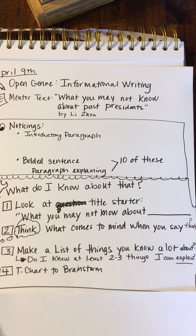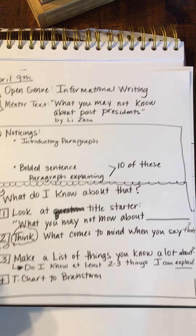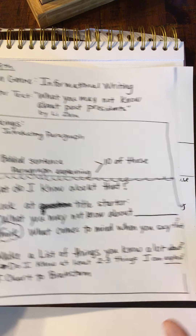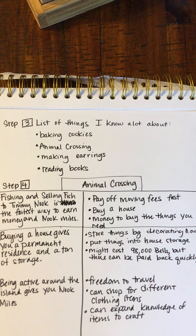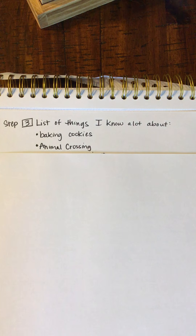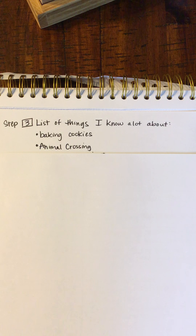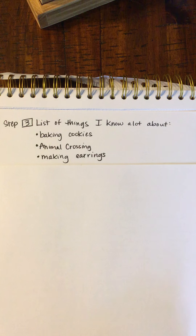Number four: use a T-chart to brainstorm. Taking this work forward — I've already done steps two, three, and four. For step three, my list of things I know a lot about: we recently made sugar cookies shaped like carrots, rabbits, and Easter eggs, so baking cookies is fresh in my mind. Then there's Animal Crossing, because during COVID-19 quarantine we've been playing a lot of Animal Crossing: New Horizons. And then making earrings — but again there's not really a lot to explain and I'm not sure my readers will be interested. What about reading books? It's relaxing, it gives you a place to escape to — but do I know enough to write about that and will my reader be interested?